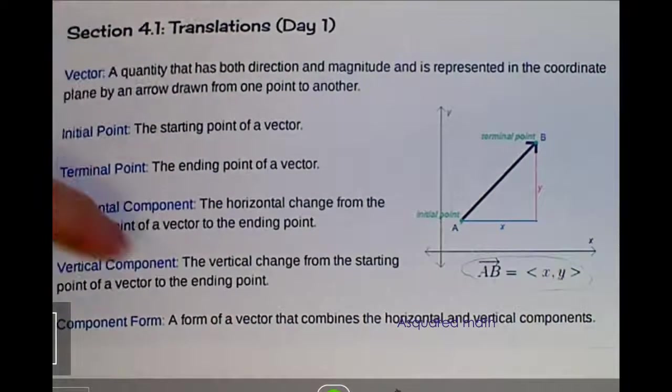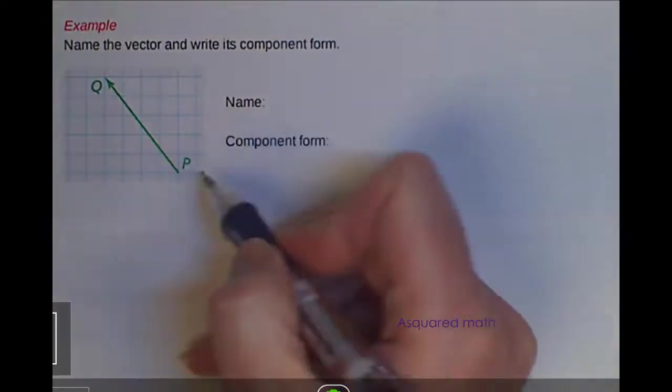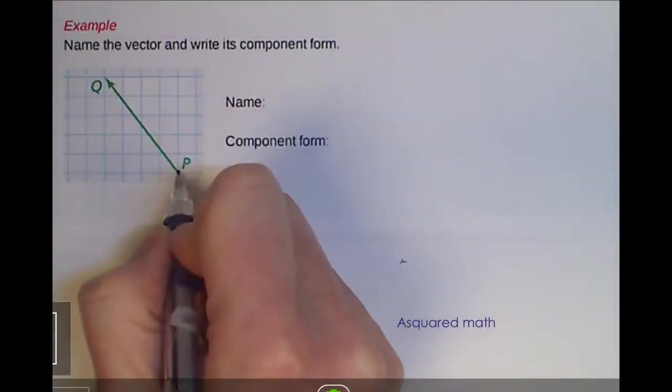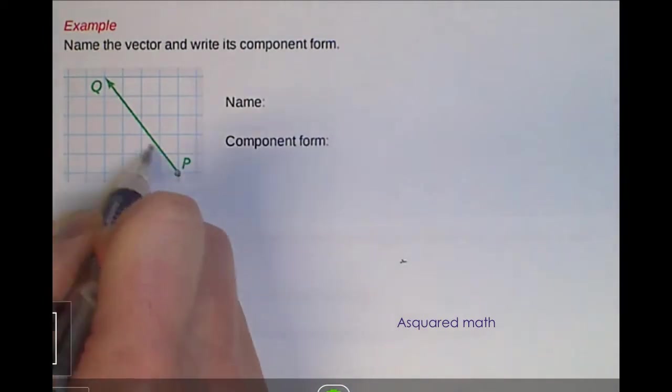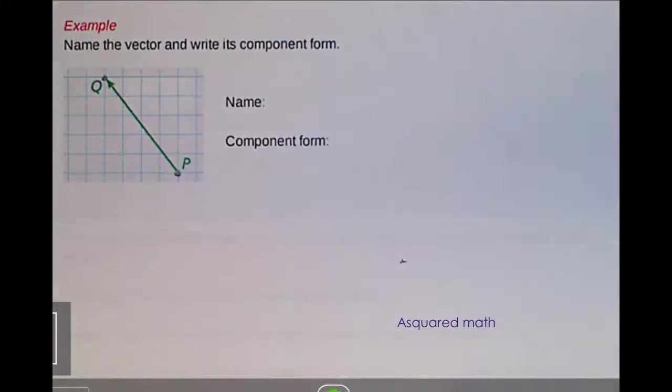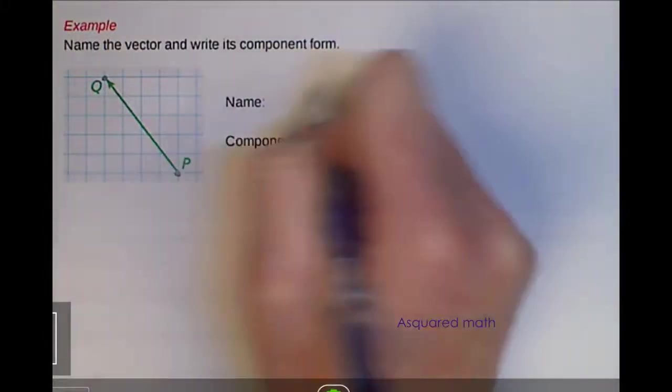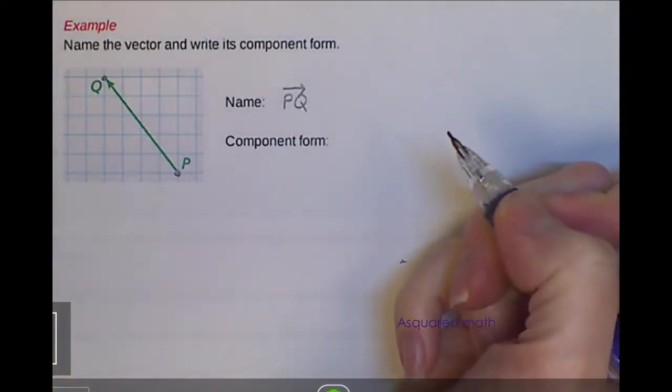Let's do an example together. Name the vector and write it in component form. So this vector starts here at point P and then it goes up and to the left and ends at point Q. So the name of this vector is PQ, and we put that arrowhead on top to indicate that it is a vector.